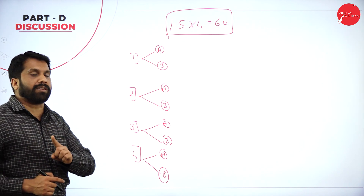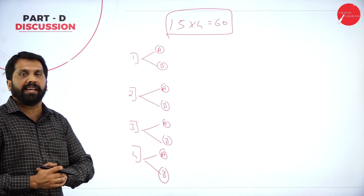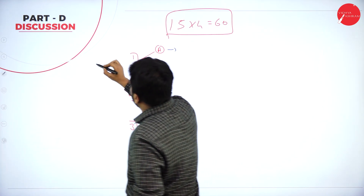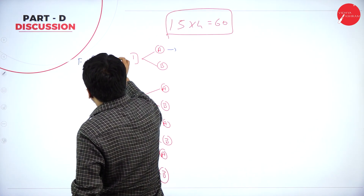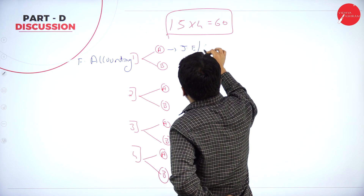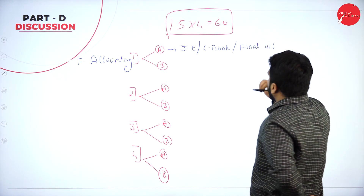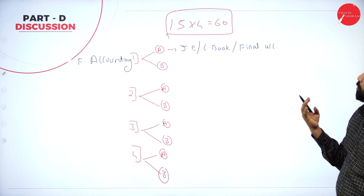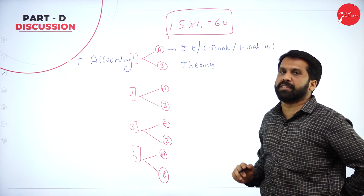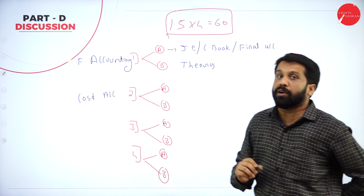Each 15-mark question will cover a specific subject area. Question A will be financial accounting — they may ask journal entry, three-column cash book, or final accounts. One will be theory from the 12 theories I gave you. Question B will be cost accounting — they may ask cost sheet along with one theory, or sometimes fund flow statement.